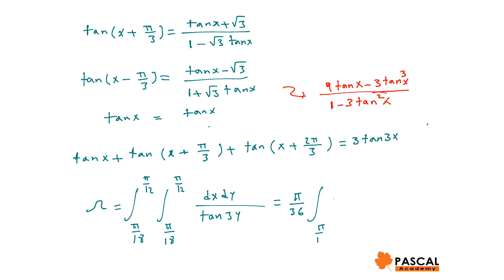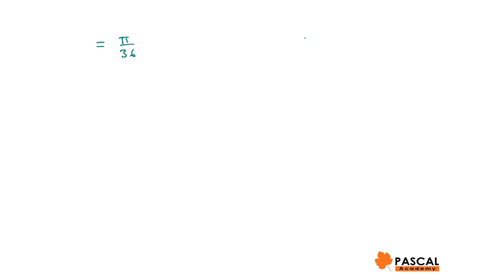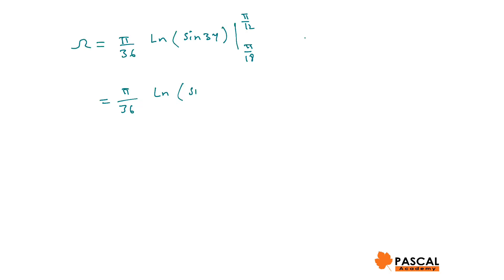This simplifies to the integral from pi over 18 to pi over 12 of cot(3y) dy. The integral of cot(3y) is (1/3) ln|sin(3y)|, so omega equals (pi over 36) times ln|sin(3y)| evaluated, giving (pi/36) times [ln(sin(pi/4)) minus ln(sin(pi/6))].